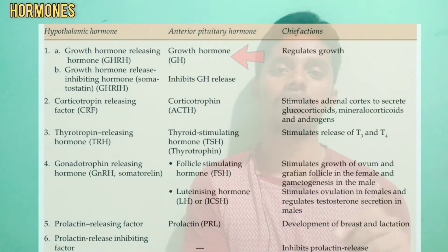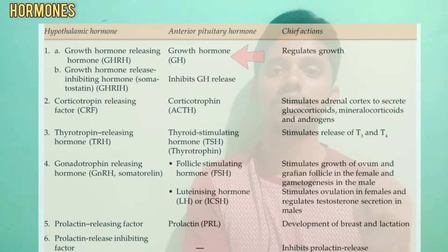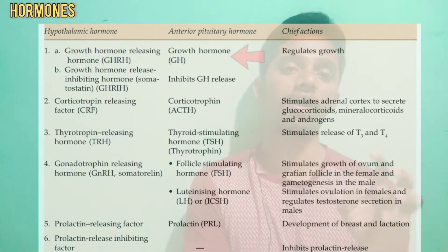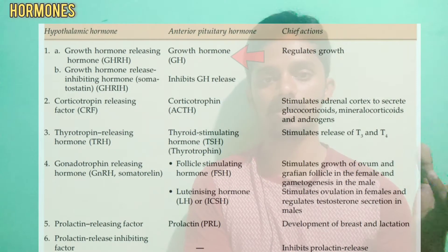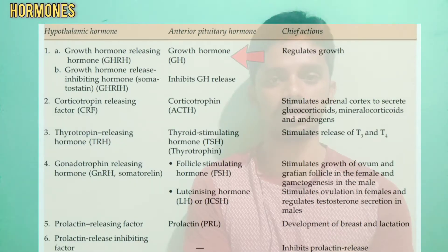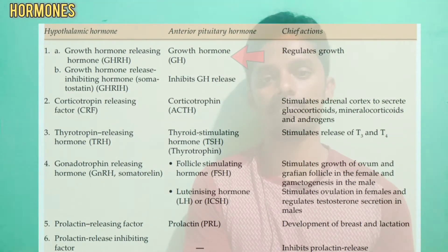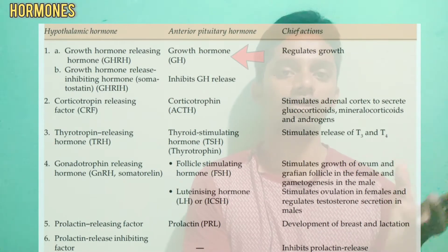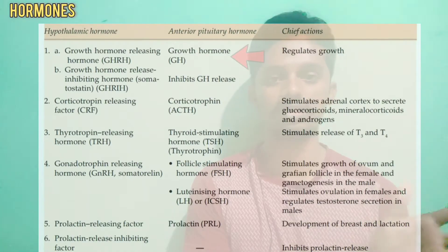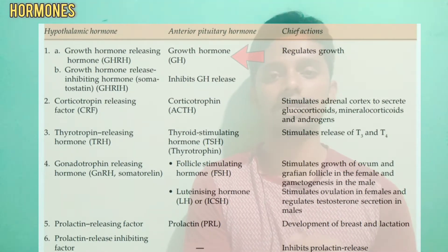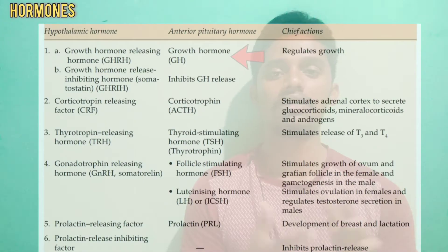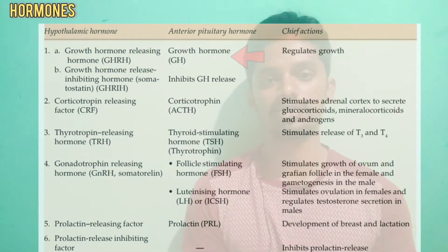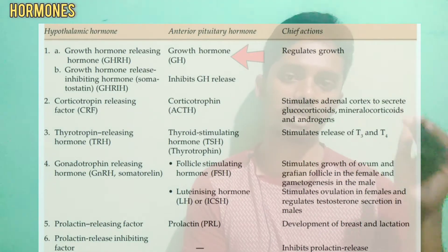Somatostatin inhibits growth hormone release and reduces the growth rate. In our body there are two types of feedback reactions: positive feedback mechanism, where the response is stimulated, and negative feedback mechanism, where the response is brought back to normal. This is how the hypothalamus controls hormone levels.